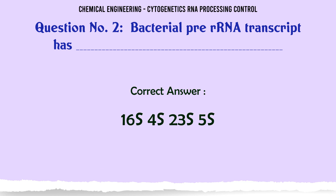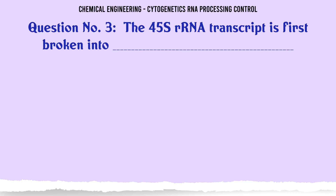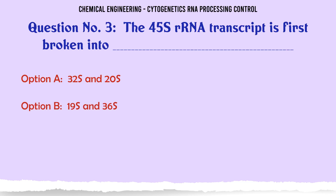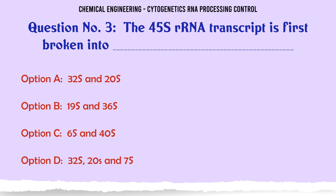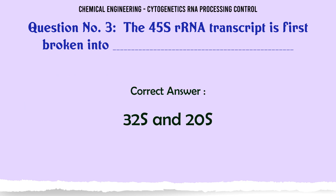The 4.5S rRNA transcript is first broken into: A. 32S and 20S; B. 19S and 36S; C. 6S and 40S; D. 32S, 20S and 7S. The correct answer is 32S and 20S.